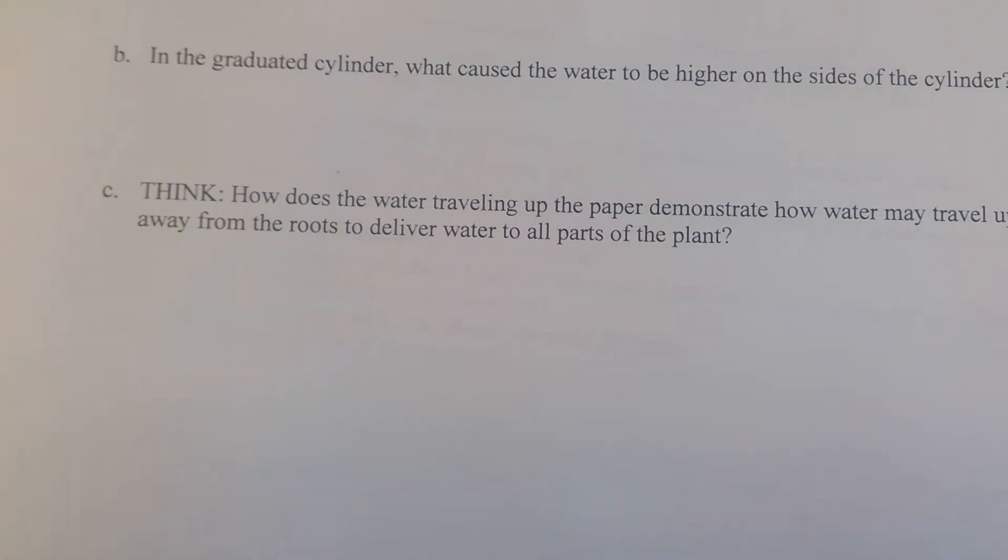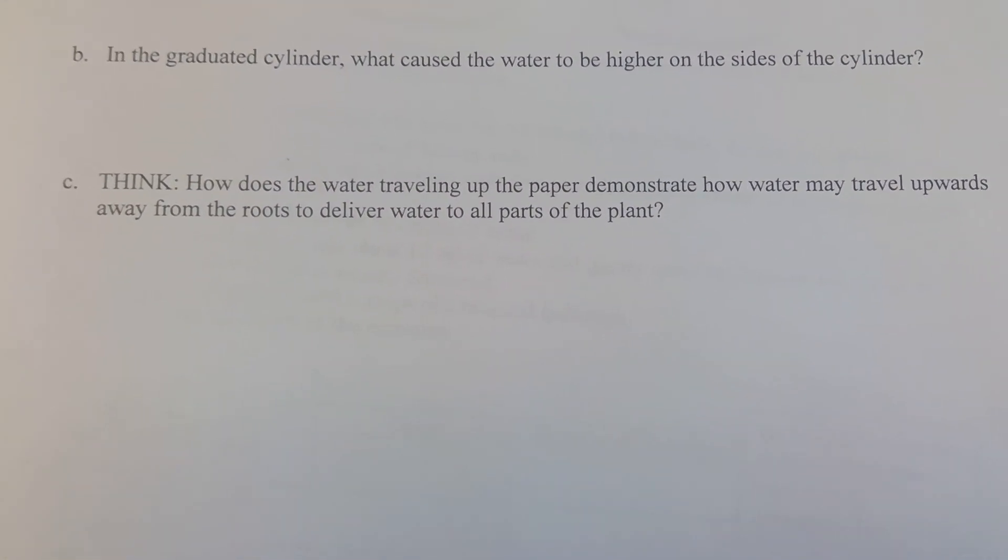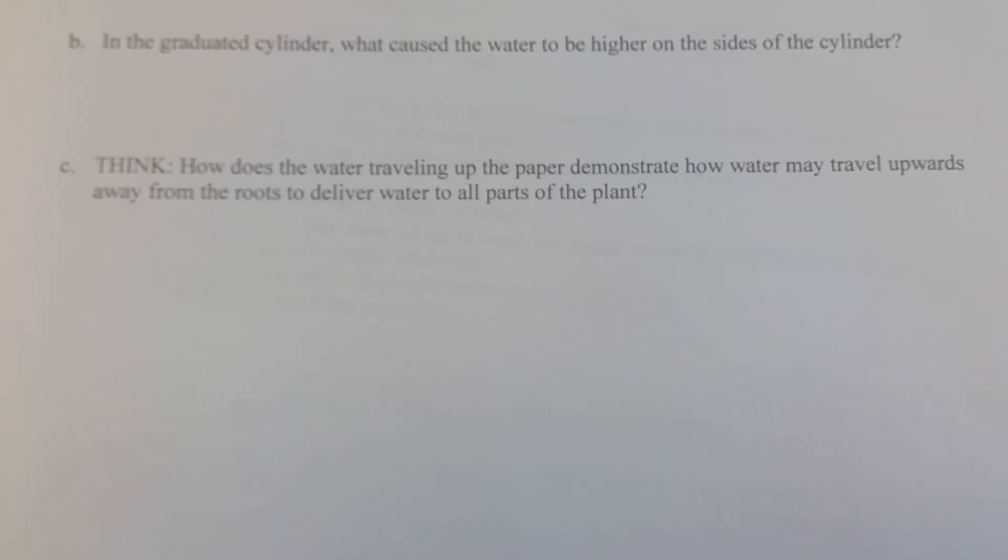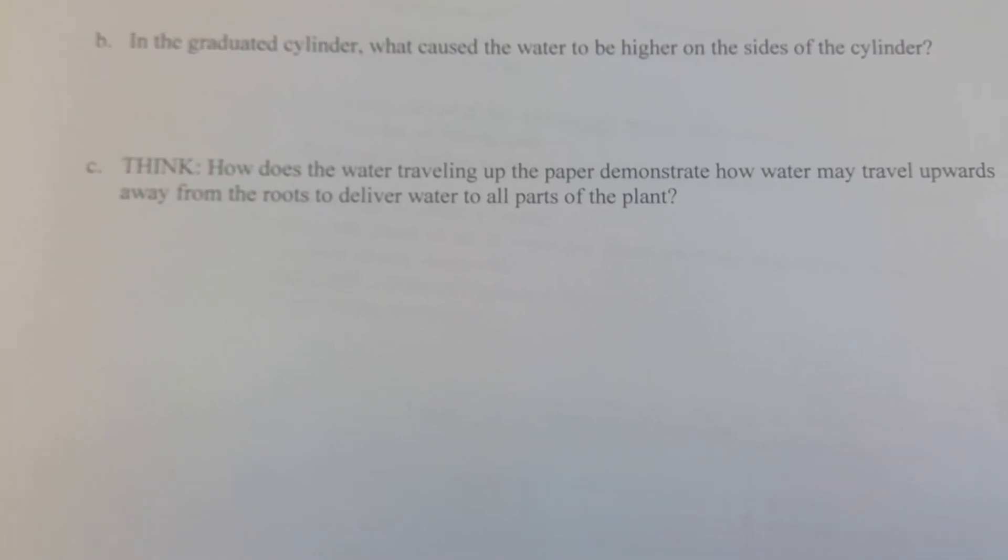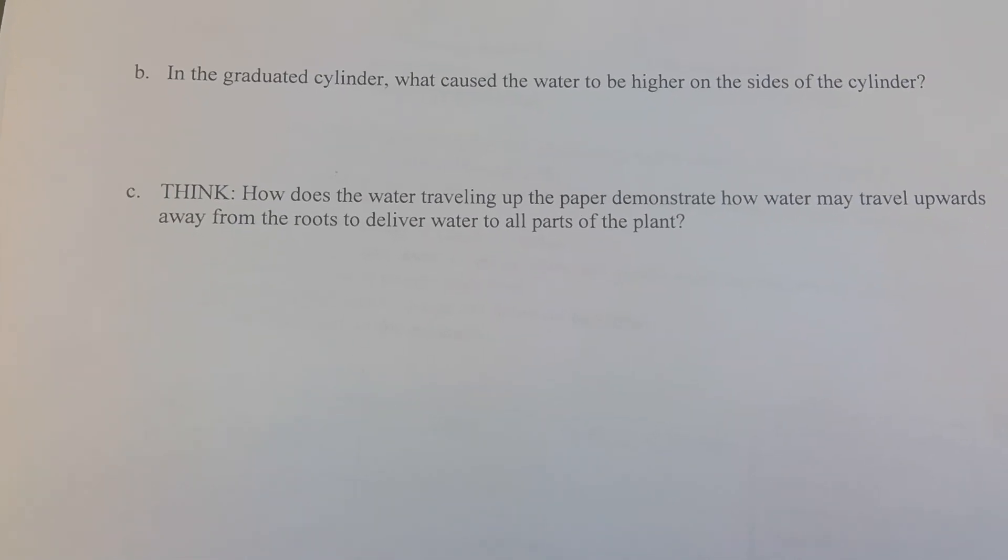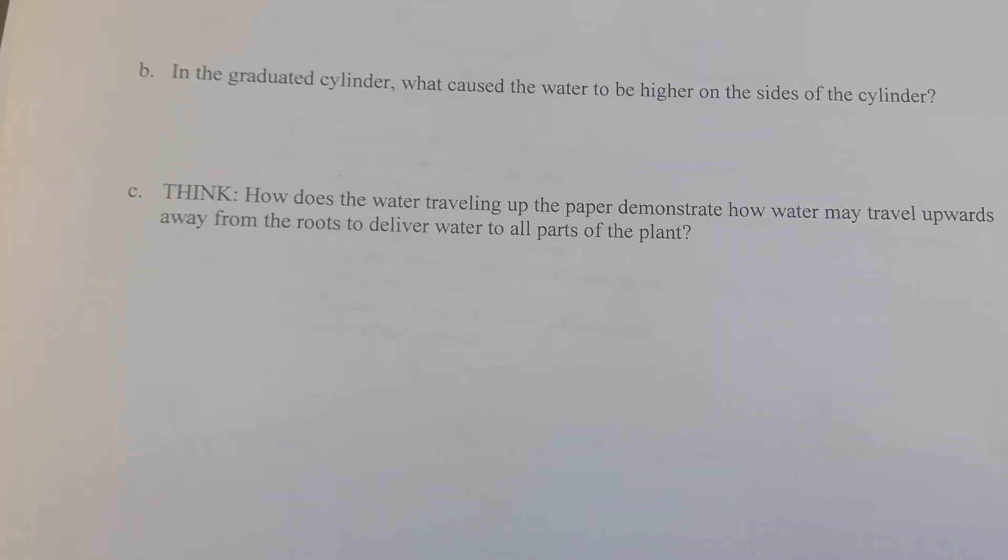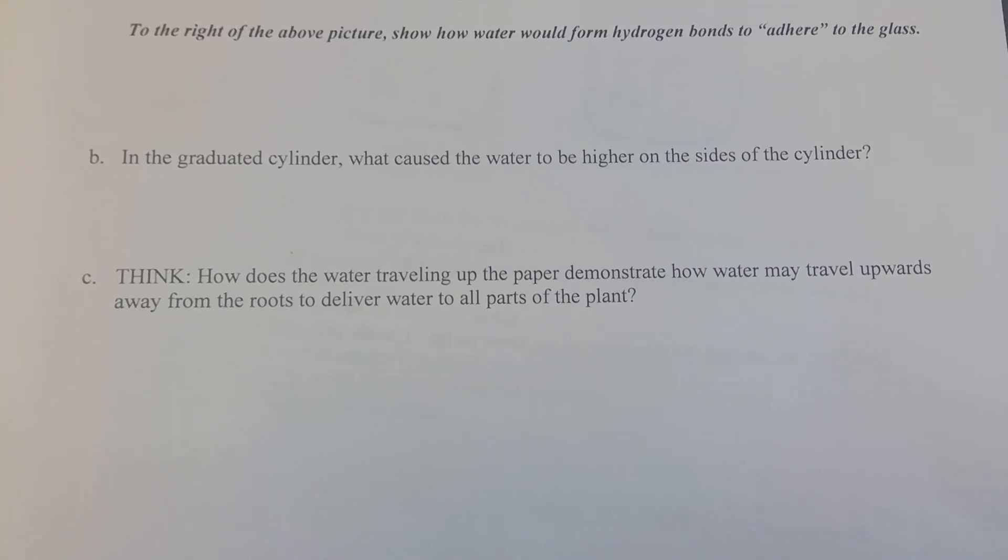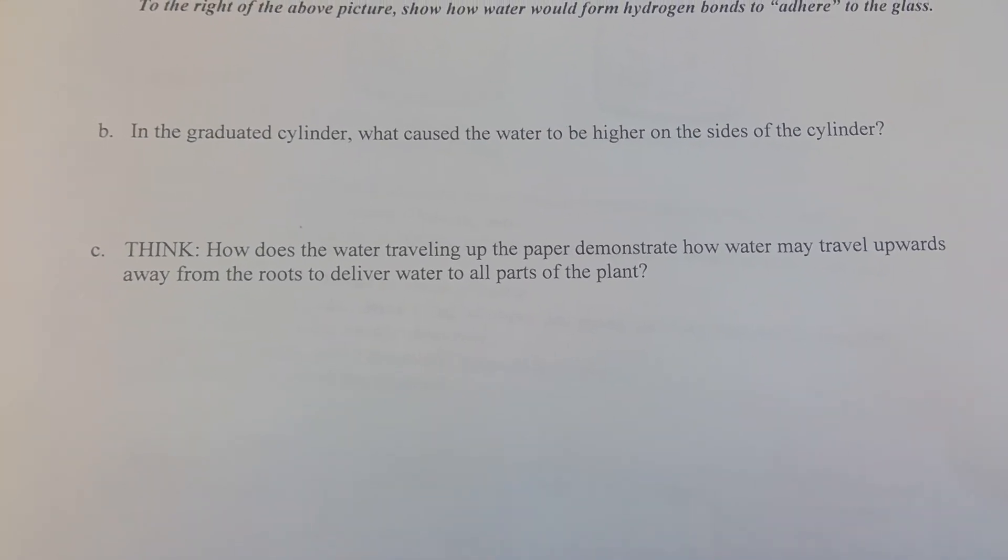So the question is, how does the water traveling up the paper demonstrate how water may travel upwards away from the roots to deliver water to the parts of the plant? Because in a plant, the leaves are the part that do photosynthesis, and one of the things that is required for photosynthesis is water. So you want to think about how you would answer that question.